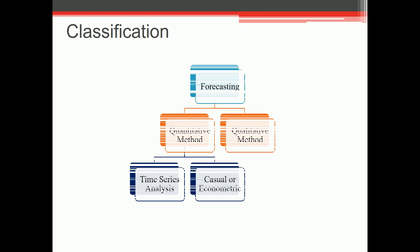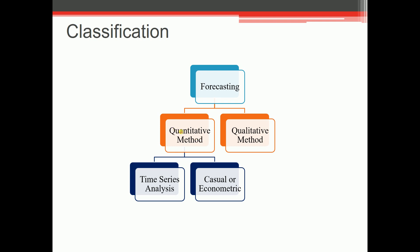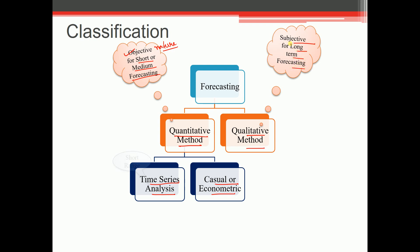Let's see the classification of forecasting. Broadly speaking we can classify forecasting under two broad categories. One is called quantitative method and other is your qualitative method. Quantitative method is further classified into two which is called time series analysis and the second one is casual or econometric. This quantitative method is of objective nature and it is used for short or medium term forecasting, and this qualitative method is subjective in nature and it is used for long term forecasting. Time series analysis is used for short range and casual or econometric method of forecasting is used for medium range.